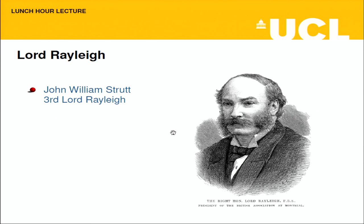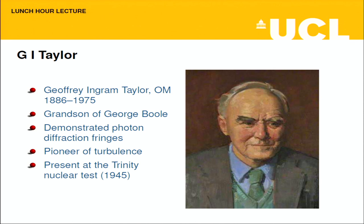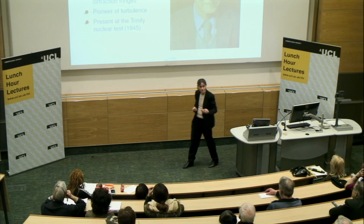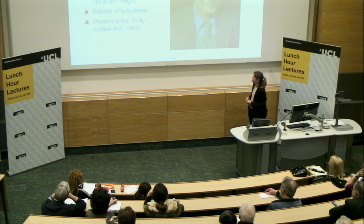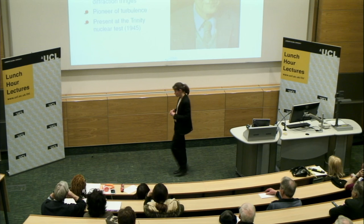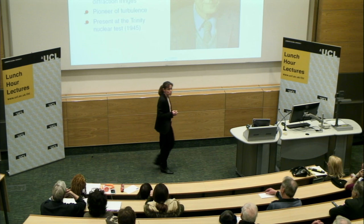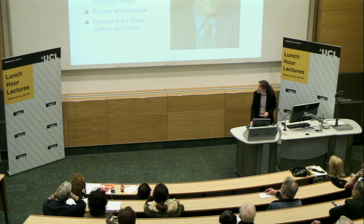Rayleigh — yes, him again. And Taylor: G.I. Taylor, much more recent. He was the grandson of George Boole, a little-known fact. Again, pretty wide-ranging — he was a pioneer of turbulence. He was also one of the first to demonstrate that in photon slit experiments you could see diffraction fringes even when the average density was less than one photon at a time. He was present at the Trinity nuclear test, and afterwards, working from photographs published in a magazine, he back-engineered the yield and published it — which was not very popular because it was classified.